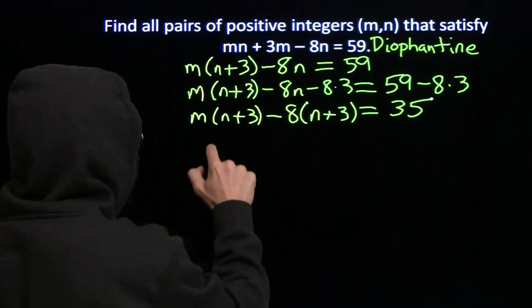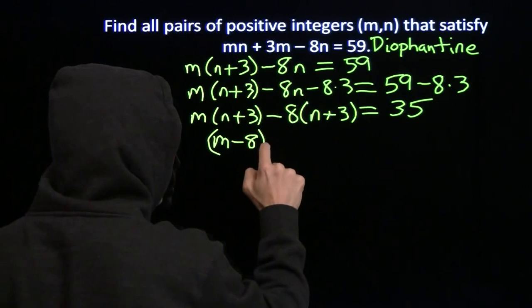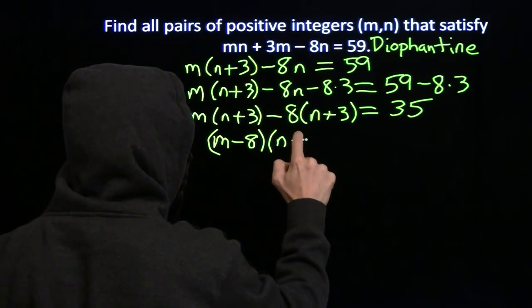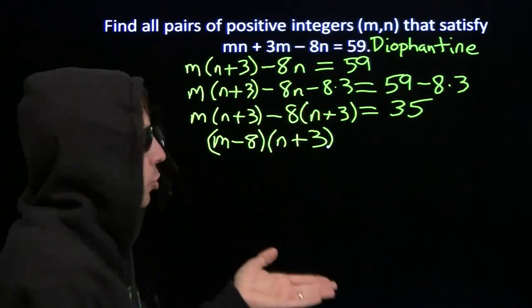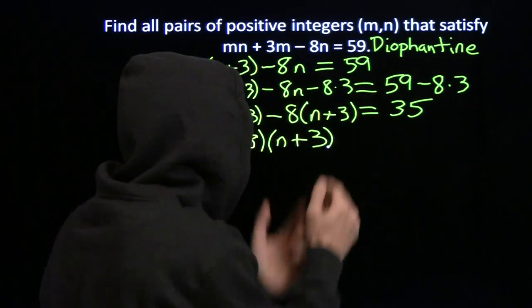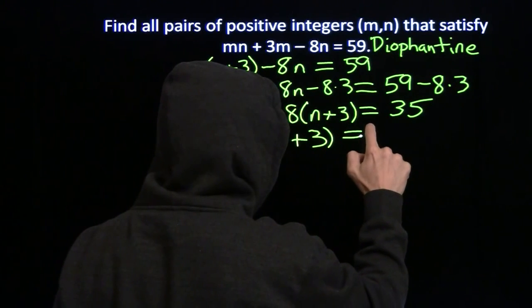And now we can factor again. And this, this step right here where we tacked on that little minus 8 times 3, that's Simon's favorite factoring trick. Throw in a little extra term there on both sides to let us factor the left-hand side. Simon's wicked smart.